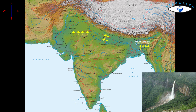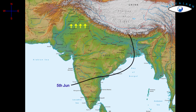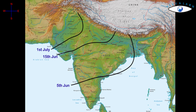The Arabian Sea and Bay of Bengal Branches of the monsoon merge over the northwestern part of the Ganga Plain. Delhi generally receives the monsoon showers from the Bay of Bengal Branch by the end of June. By the first week of July, Western Uttar Pradesh, Punjab, Haryana, and Eastern Rajasthan experience the monsoon. By mid-July, the monsoon reaches Himachal Pradesh and the rest of the country.